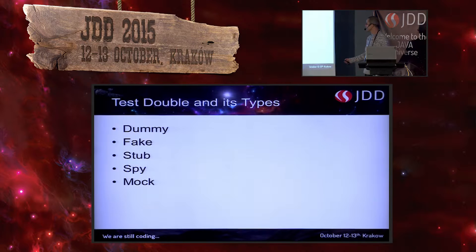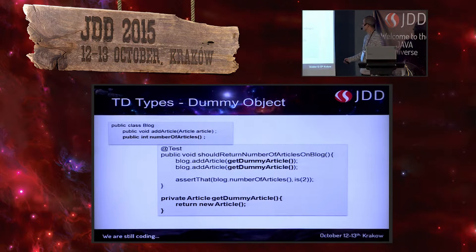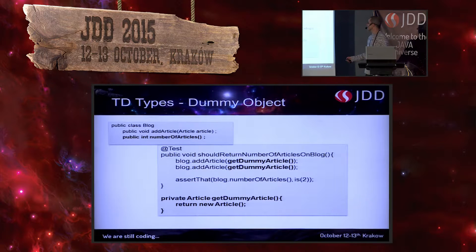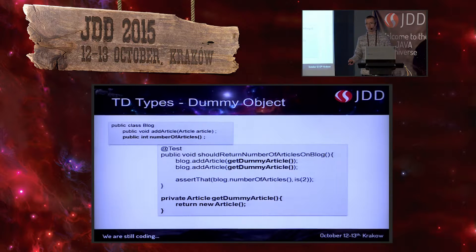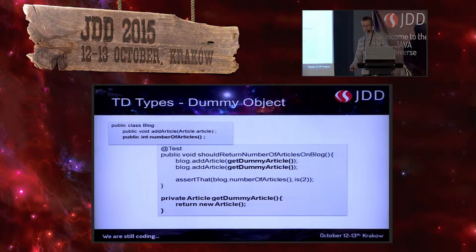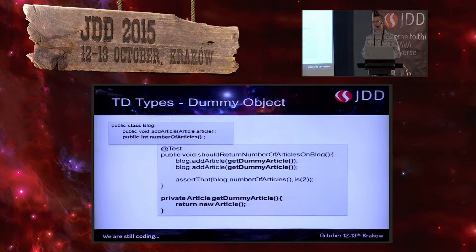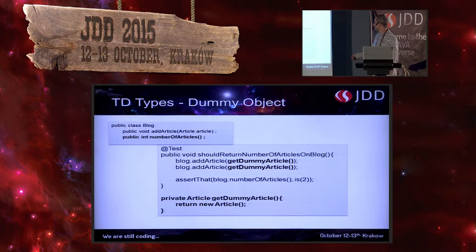Yet there are a few more. First is dummy — this is the most simplistic one. We use it whenever we don't care about any interaction. We've got a class, which is a blog. We can write articles, create new ones, and get information about the number of written articles on our blog. To test whether the number-of-articles method returns correct and valid results, we don't care what our article is. We don't care about content, author — we only care about its presence. This is our dummy object.